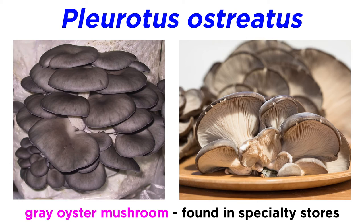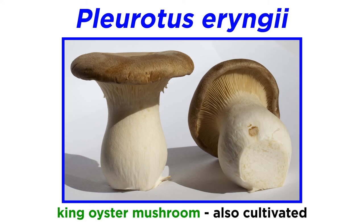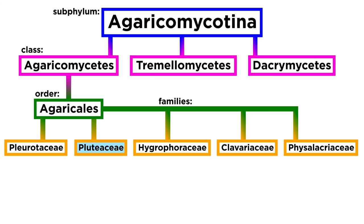A classically cultivated and foraged Pleurotus species is Pleurotus ostriatus, or the gray oyster mushroom. You can likely find this species sold at stores or markets that have a mushroom selection larger than just Agaricus bisporus, or the cremini, portobello, and button mushrooms. In addition, there are a number of other cultivated oyster mushrooms, such as Pleurotus eryngii, or the king oyster mushroom.